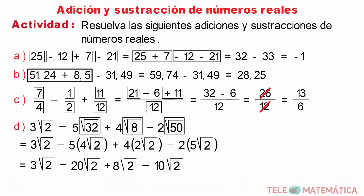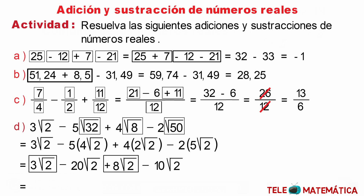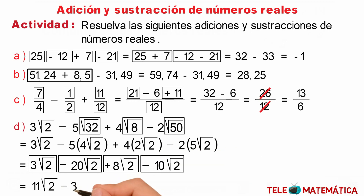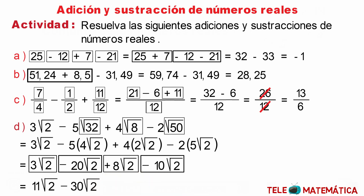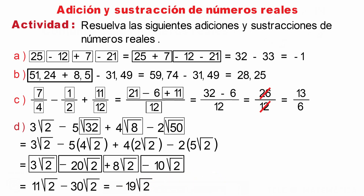Solving the numbers with positive signs gives 11 square root of 2, and solving the numbers with negative signs gives minus 19 square root of 2. The final result is 11 square root of 2 minus 19 square root of 2, which equals minus 8 square root of 2.